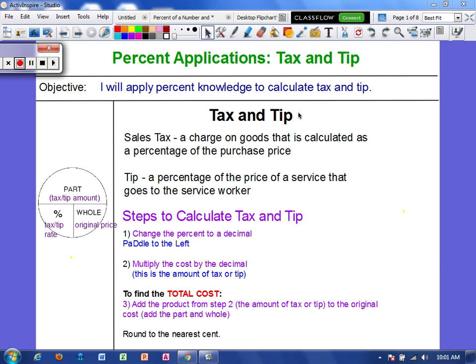So let's talk about what tax and tip are. A sales tax is a charge on goods that is calculated as a percentage of the purchase price. I'm sure you have all been somewhere before and purchased something and noticed on your receipt that you were charged a sales tax. They take a percentage of the amount that you have to pay and they add that on. So you have to pay that tax in addition to whatever you're buying.